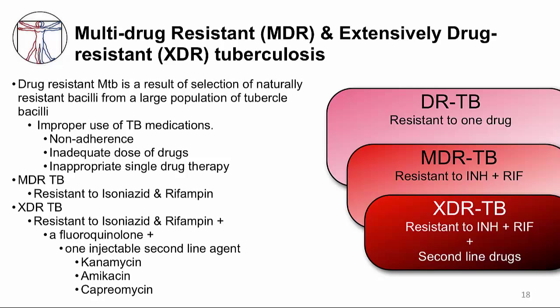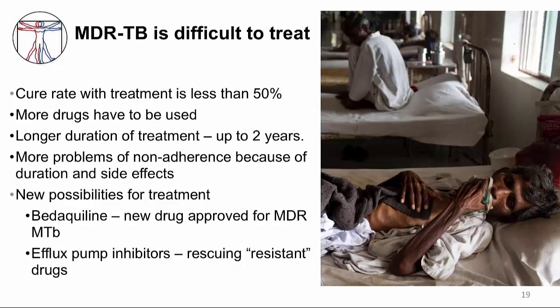Multidrug-resistant TB is even harder to treat. Cure rates are less than 50% with treatment. More than four antibiotics typically have to be given, the duration extends up to two years because second-line antibiotics must be used, resulting in even more non-adherence, more side effects because second-line antibiotics are generally more toxic, and higher cost. Multidrug-resistant TB is a major obstacle in controlling TB globally.